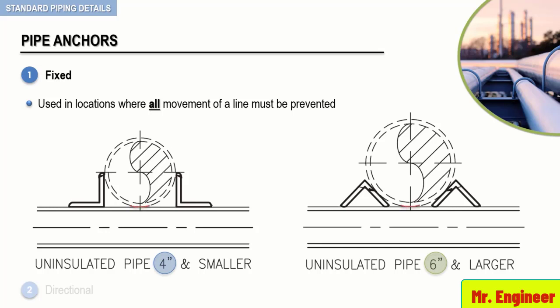Then, support angles, as highlighted here, are laid parallel to the pipe where it crosses the support, and are field-welded to the pipe and to the support. In both cases, the pipe is uninsulated.